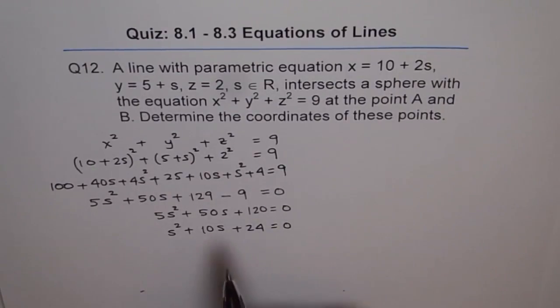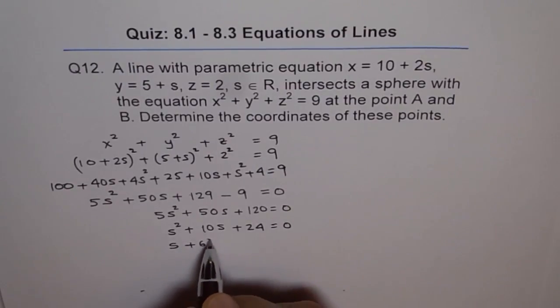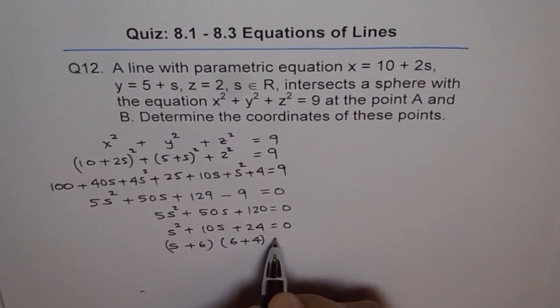Now this equation, product of 24, sum of 10. 6 times 4 is 24 and 6 plus 4 is 10. So we can write this as s plus 6 times s plus 4 equals 0.